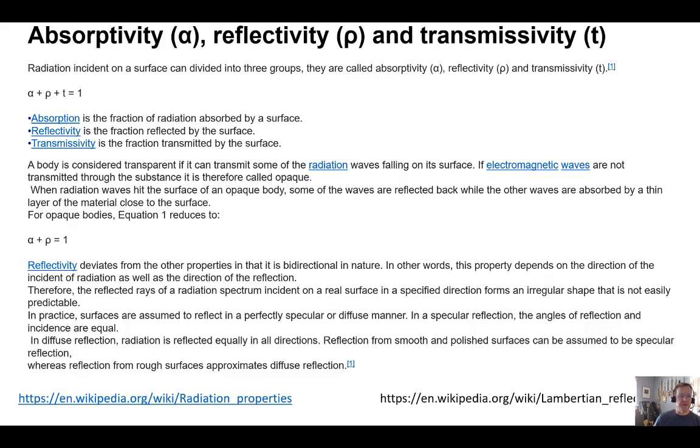Here are definitions of absorptivity, reflectivity, and transmissivity. Normally we use the Greek terms alpha, rho, and tau for those three parameters. Just remember that those three parameters have to add to 1. For example, if a leaf's got an absorptance of 80%, if alpha is 0.8, and if reflectance is 0.1, then transmissivity has to be 0.1 also. So those three terms have to add to unity or to 1. There's a Wikipedia page you can go to to study more about that.